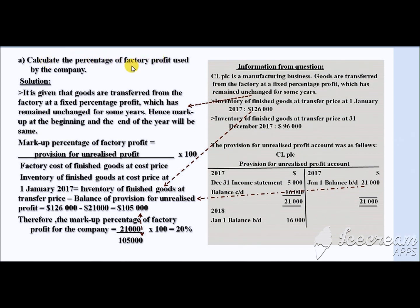In the first part of the question we are asked to calculate the factory profit. The question states that the factory profit remained unchanged for some years. Hence, we can calculate the markup percentage of factory profit using information from either the beginning or end of the year — both will give the same answer. To calculate the markup percentage of factory profit, we use the formula: provision for unrealized profit times 100, divided by the factory cost of finished goods at cost price.